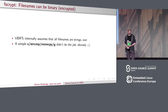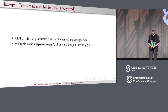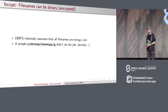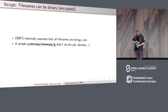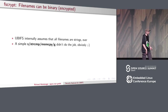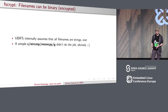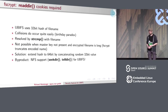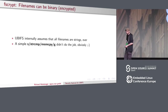UBIFS internally assumes that file names are strings. When you encrypt a string, the result is no longer a string — it's just binary. We had to change UBIFS to handle the fact that stored file names are no longer strings. It was much more work than just search-and-replace, because there are many places in UBIFS that implicitly assumed strings — for example, places that randomly append a null byte because it's a string, and a null terminator is expected. We had to find all these places.